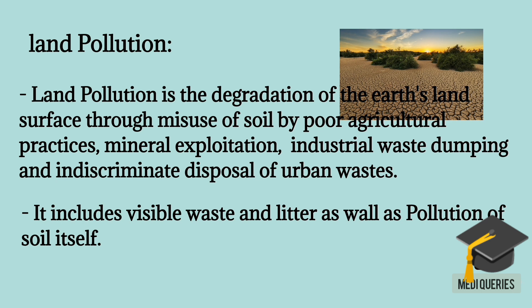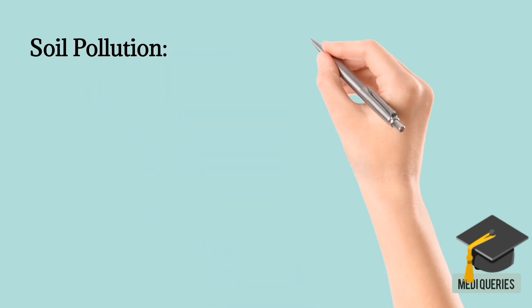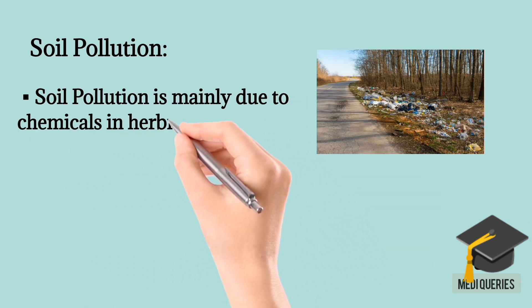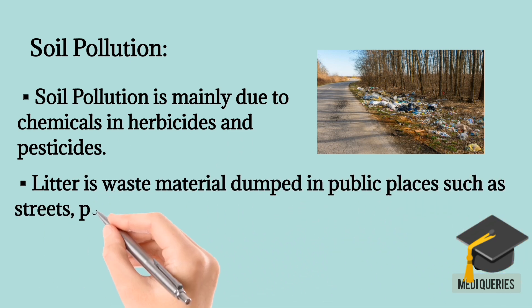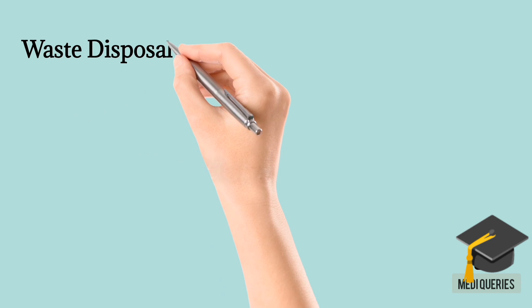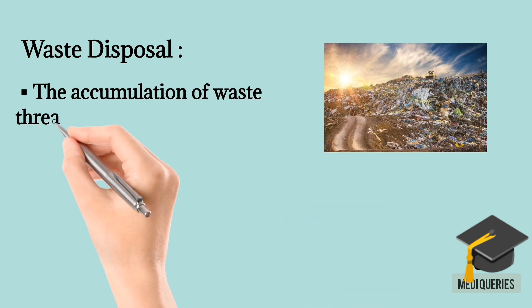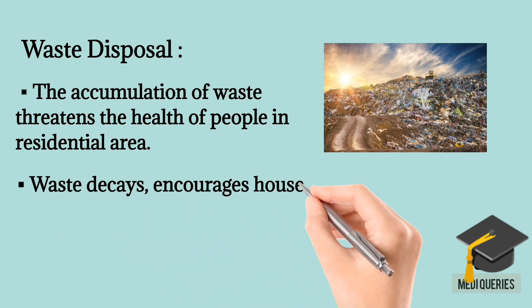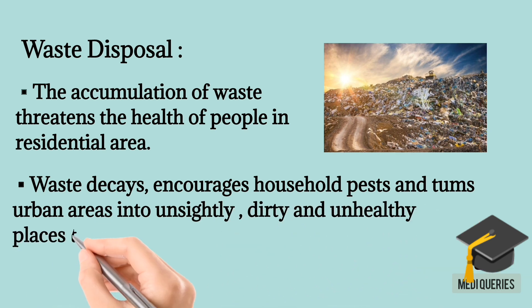Land pollution includes visible waste and litter as well as pollution of the soil itself. Soil Pollution is mainly due to chemicals in herbicides and pesticides. Litter is waste material dumped in public places such as streets, parks, picnic areas, at bus stops, and near shops. The accumulation of waste threatens the health of people in residential areas. Waste decays, encourages household pests, and turns urban areas into unsightly, dirty, and unhealthy places to live.